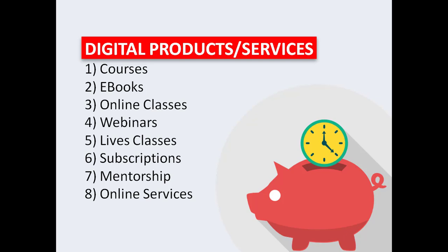Your digital product can also be in the form of ebooks. You can put together an ebook on what you know well and sell it to people for a thousand Naira, two thousand Naira, five thousand Naira, or ten thousand Naira depending on the quality of that ebook. You can also put together webinars. I've seen people make money from webinars — they organize an hour webinar on Facebook and tag the price at five hundred Naira or a thousand Naira. If a thousand persons attend that webinar, you know how much you're making depending on the price you tag on it.